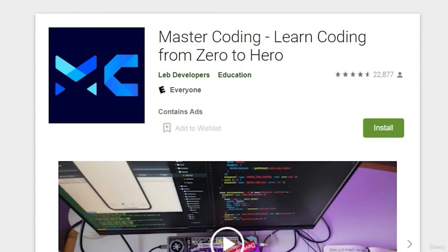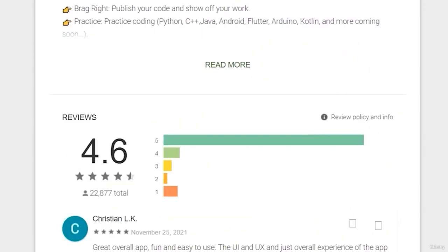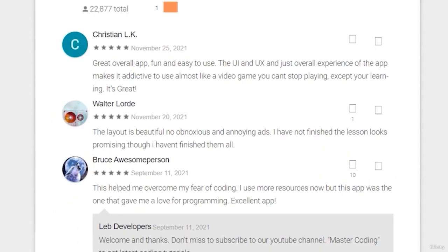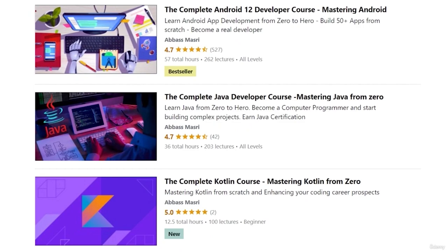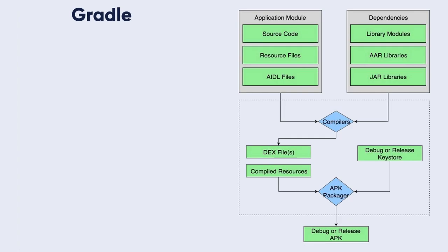If you want to learn Android app development and start publishing your own apps, join our Udemy bestseller and highly rated course — a free coupon is in the description below. Each build configuration can define its own set of code and resources while reusing the parts common to all versions of your app.